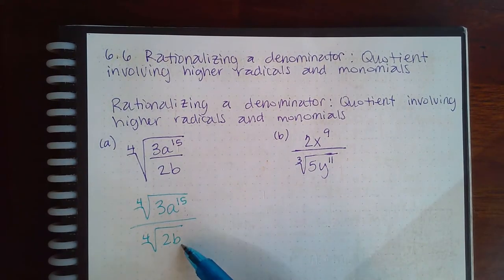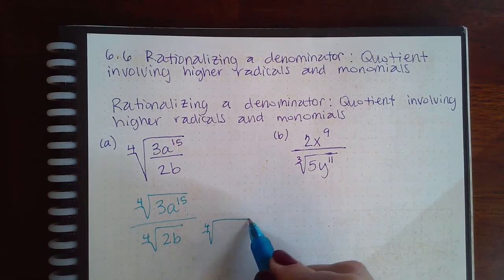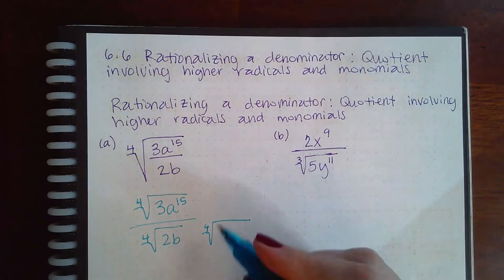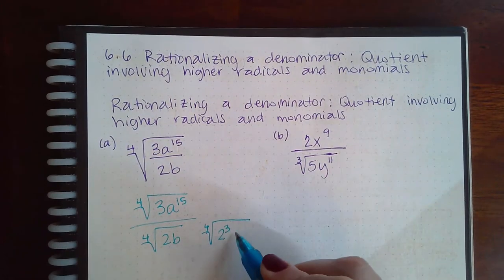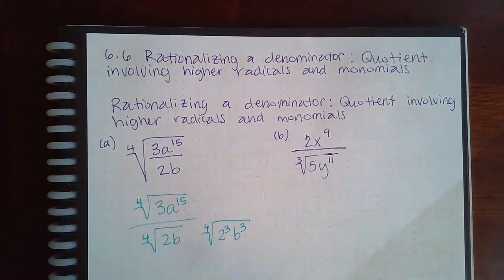Now, for the bottom, you have a 2 and you have a b. How many more do you need for the fourth power to cancel it out? You would need 3 more 2s and you would need 3 more bs.